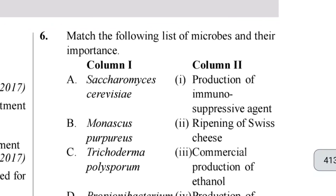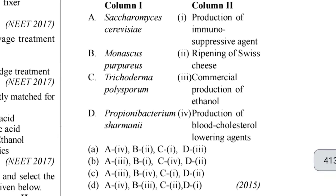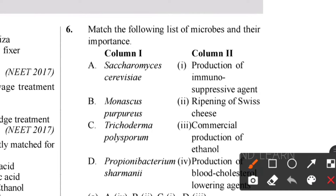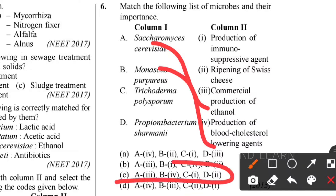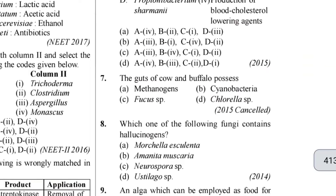Sixth question: match the list of microbes and their importance. Saccharomyces cerevisiae - commercial production of ethanol. Monascus purpureus - production of blood glucose-lowering agent called statins. With these two we can identify option C as the correct answer. C includes production of immunosuppressive agent by Trichoderma polysporum, and Propionibacterium sharmanii for ripening of Swiss cheese. Option C is the correct answer.